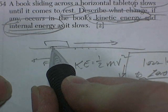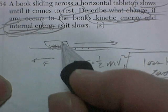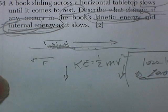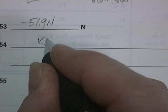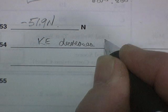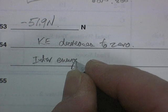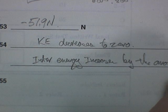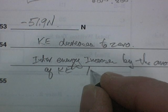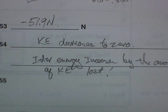The thing that causes it to slow down is friction, molecular interactions between the book and tabletop. That molecular action causes molecules to move faster, which is the definition of internal energy or heat. Kinetic energy decreases to zero. Internal energy increases by the amount of kinetic energy lost. Sure hope they don't grade for penmanship.